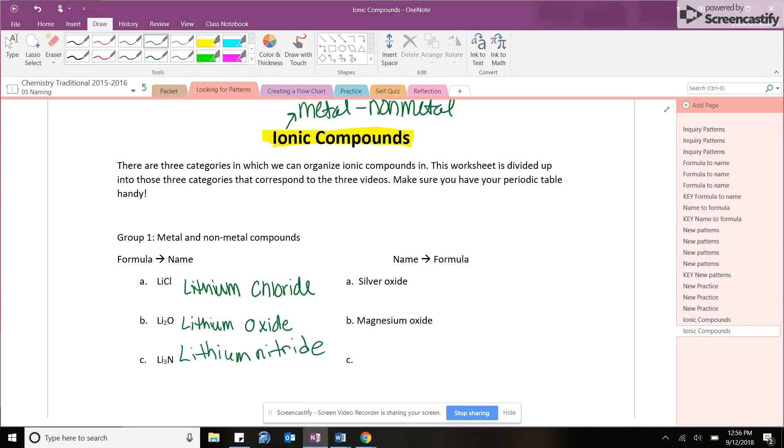But when we move on and do the reverse route, when we look at the name and we have to write the formula, like in the next column, things are a little bit different. We have to pay attention to one more thing on the periodic table. So when lithium chloride had no subscript, but lithium oxide had two and lithium nitride three. So we got to look at something on the periodic table to let us know if we need to actually put in those subscripts.